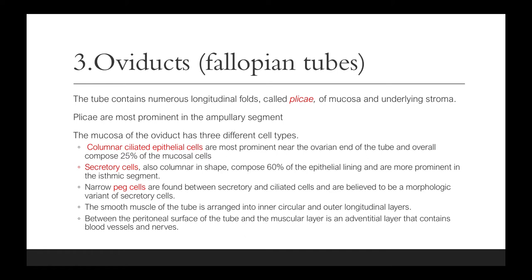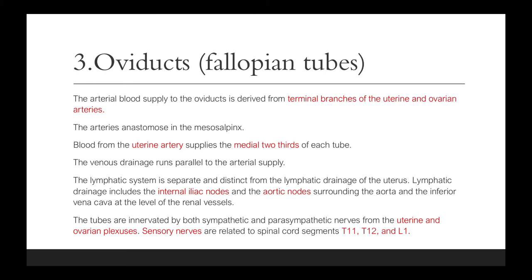The smooth muscle of the tube is arranged into an inner circular and outer longitudinal layers. Between the peritoneal surface of the tube and the muscular layer is an adventitial layer that contains blood vessels and nerves. The arterial blood supply to the oviducts is derived from terminal branches of the uterine and ovarian arteries, which anastomose in the mesosalpinx. Blood from the uterine arteries supplies the medial two-thirds of each tube. The venous drainage runs parallel to these arterial supplies. The lymphatic system is separate and distinct, draining to the internal iliac nodes and the aortic nodes at the level of the renal vessels.